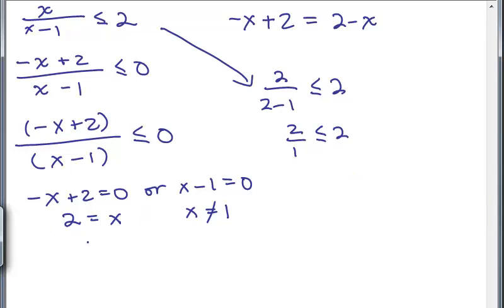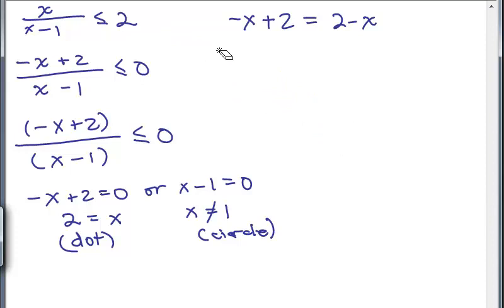The reason is because that's the critical point that came from the numerator and it has a less than or equal symbol. So just keep in mind, here we're going to put a dot. This one we're going to put a circle on.